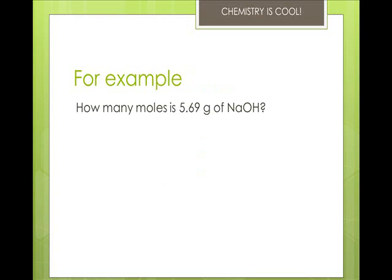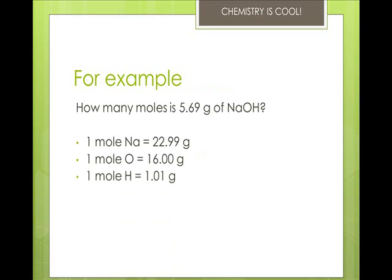For example, how many moles is 5.69 grams of sodium hydroxide? Well, first you have to find out the molar mass of sodium hydroxide. So we're going to add that up. 22.99 plus 16 plus 1.01 gives us a total of 40 grams per mole.